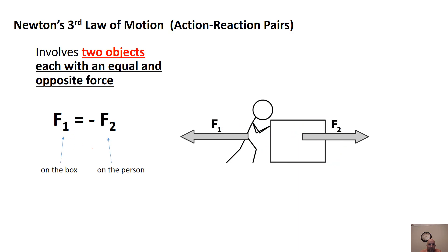So we have two objects: the stick figure (object 1) and the box (object 2). That's where the subscripts come from — F1 is for the box, F2 is for the person. Let's do a little bit of math with this.